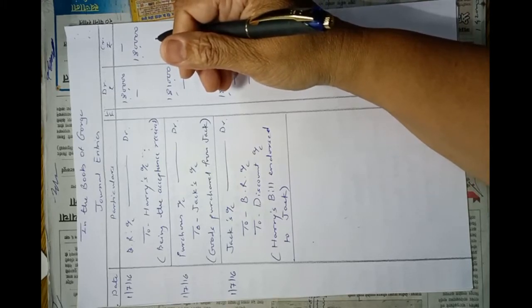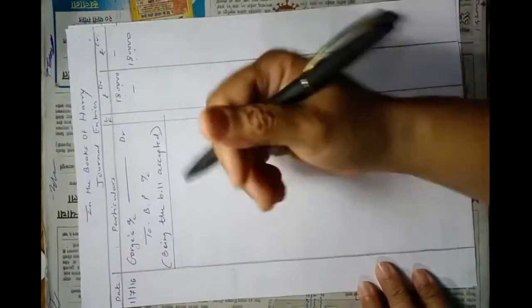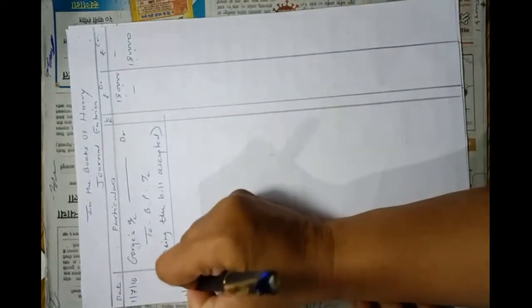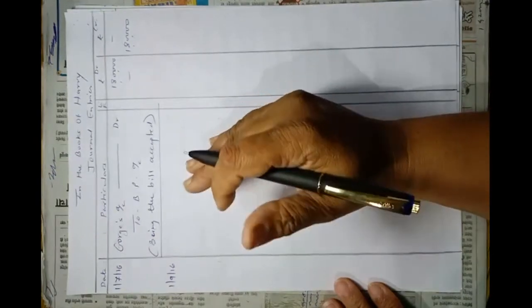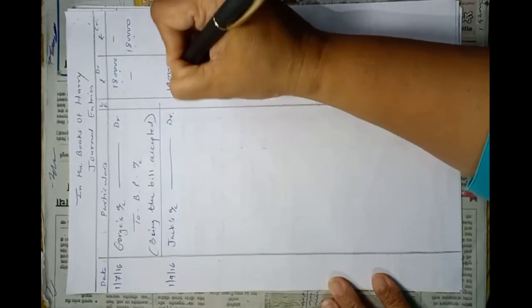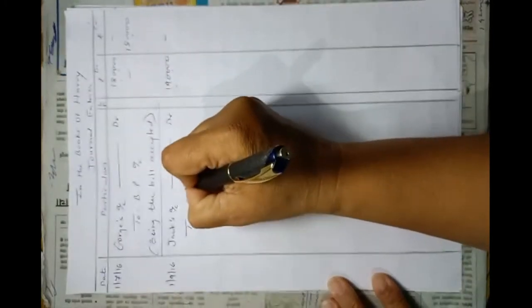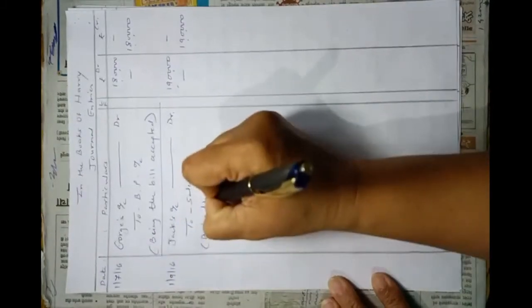On 1st September 2016, Jack purchased goods worth Rs. 1,90,000 from Harry. This transaction is between Jack and Harry. In the books of Harry: Jack's account debit Rs. 1,90,000 to Sales account Rs. 1,90,000.